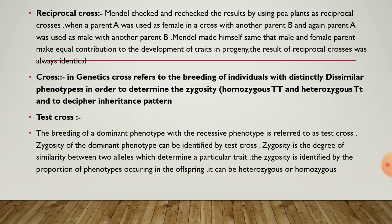Reciprocal cross: Mendel checked and rechecked the results by using pea plants as reciprocal crosses. When parent A was used as female in a cross with another parent B, and again parent A was used as male with another parent B, Mendel confirmed that male and female parents make equal contribution to the development of traits in progeny. The results of reciprocal crosses were always identical. In genetics, cross refers to the breeding of individuals with distinctly dissimilar phenotypes in order to determine the zygosity.